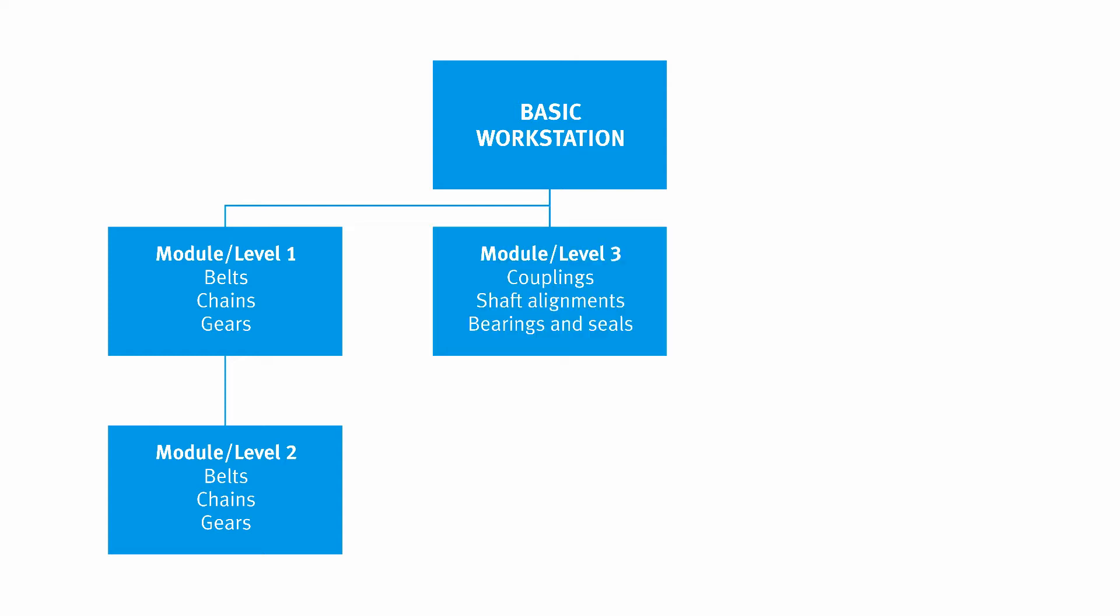Then Module 3 covers shaft alignments, couplings and bearings, as well as seals. Finally, Module 4 covers clutches, brakes, ball screws and linear bearings.